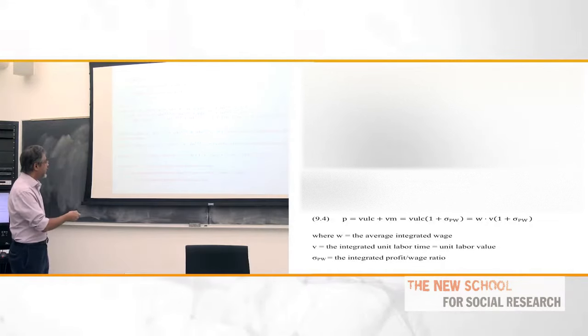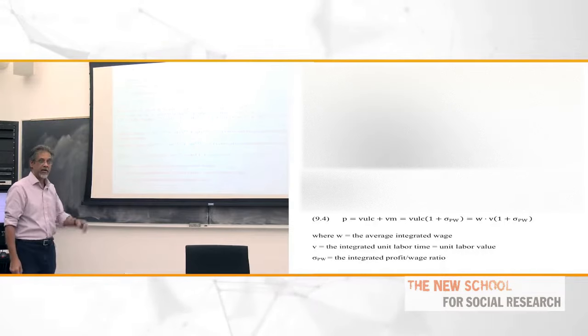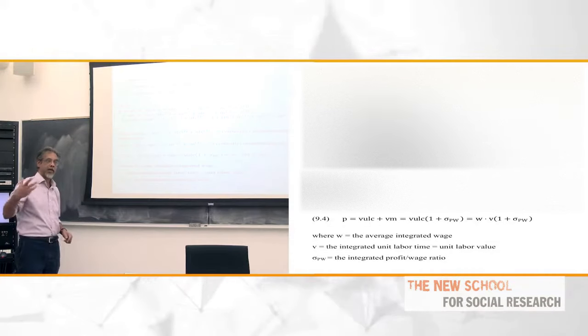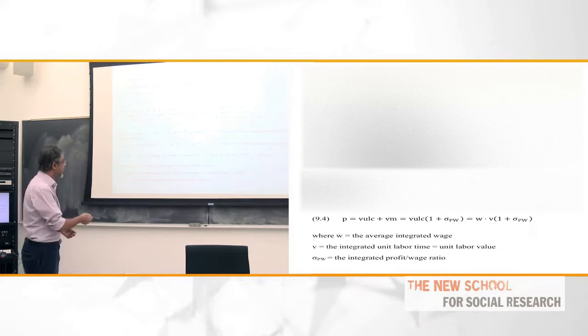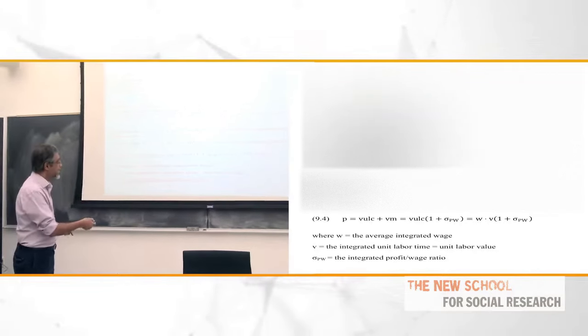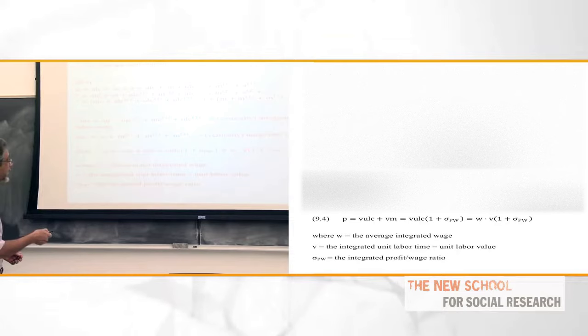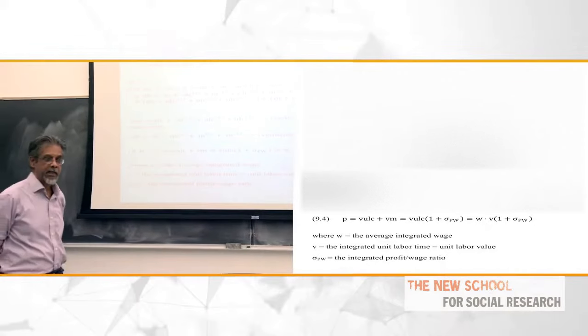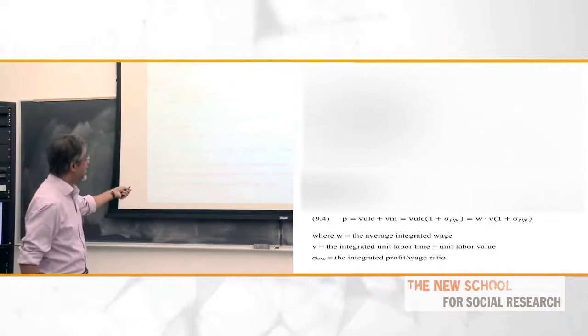If I factor out the vertically integrated unit labor costs, then I get 1 plus the ratio of vertically integrated profits per vertically integrated wages — because the output units cancel out. So I have vertically integrated unit labor costs times 1 plus the vertically integrated profit-wage ratio. Vertically integrated unit labor costs is the vertically integrated wage times the vertically integrated labor time V, times this distribution term. And V is the equivalent of Marx's unit labor value. So what I've done — and this is a natural way for the classical argument to proceed — is I've taken any price and broken it into the product of the wage rate, labor value or integrated labor time, and a distribution term.